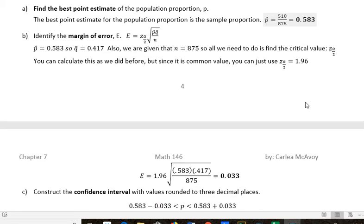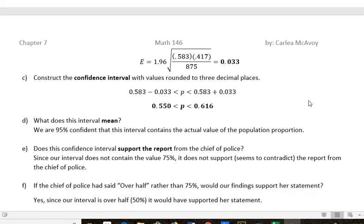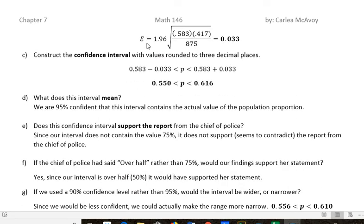Now I'm going to plug all those values into my margin of error formula. Critical value of 1.96, p̂ equals 0.583, q̂ equals 0.417, n equals 875. I do this calculation on my calculator and get 0.033. That's the margin of error.